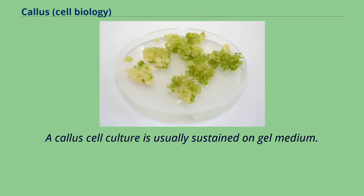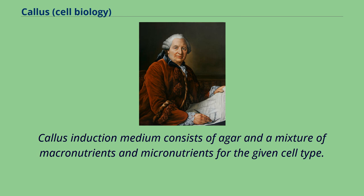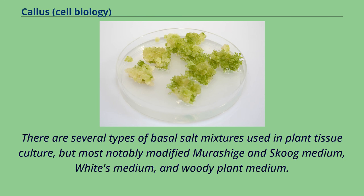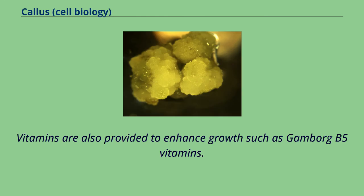A callus cell culture is usually sustained on gel medium. Callus induction medium consists of agar and a mixture of macronutrients and micronutrients for the given cell type. There are several types of basal salt mixtures used in plant tissue culture, most notably modified Murashige and Skoog medium, White's medium, and woody plant medium. Vitamins are also provided to enhance growth, such as Gamborg's B5 vitamins.